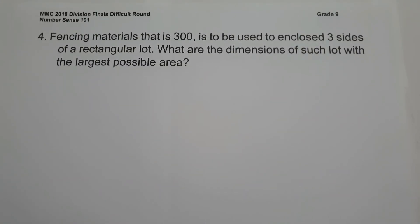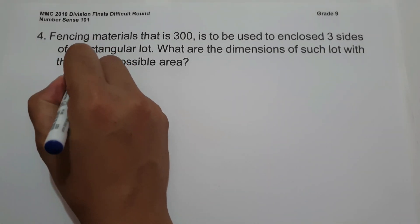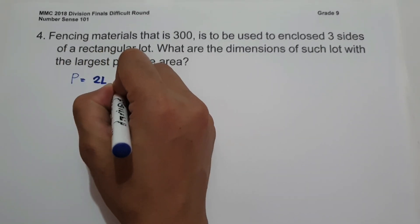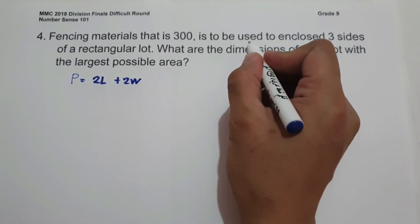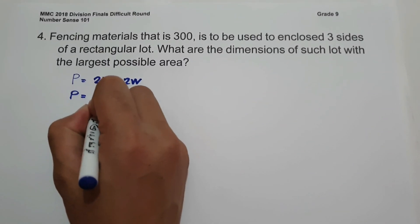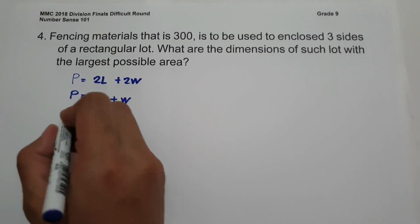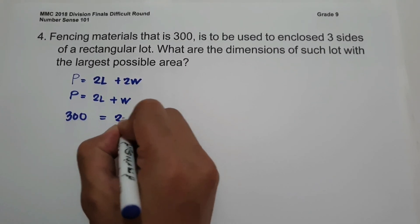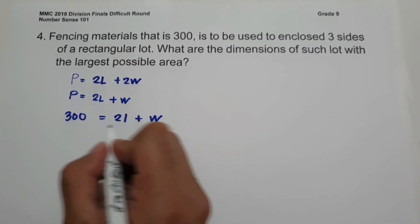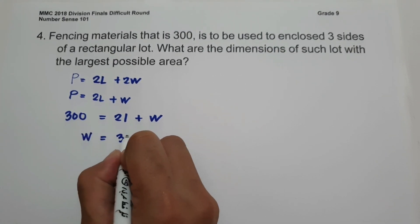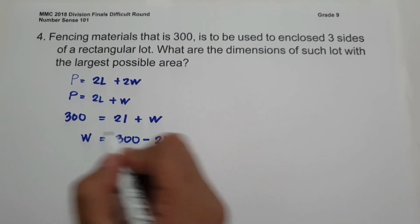On number 4: 300 meters of fencing material is to be used to enclose 3 sides of a rectangular lot. What are the dimensions of such a lot with the largest possible area? Since we enclose 3 sides, the perimeter formula becomes P = 2L + W. So 300 = 2L + W, which gives W = 300 − 2L.